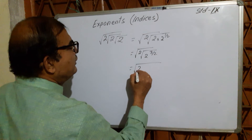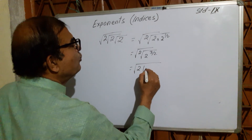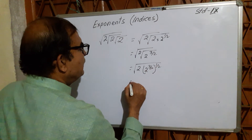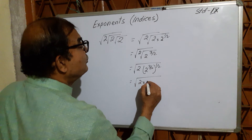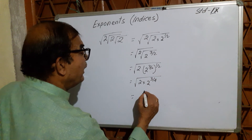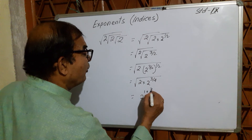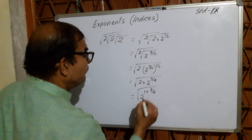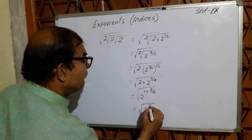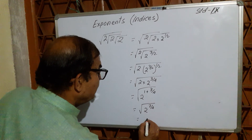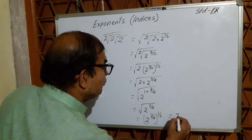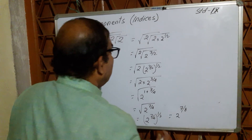Now eliminate the next square root sign: 2 × 2^(3/2 × 1/2) = 2 × 2^(3/4). So we have 2^(1 + 3/4) = 2^(7/4), and then eliminating the final square root gives 2^(7/8).